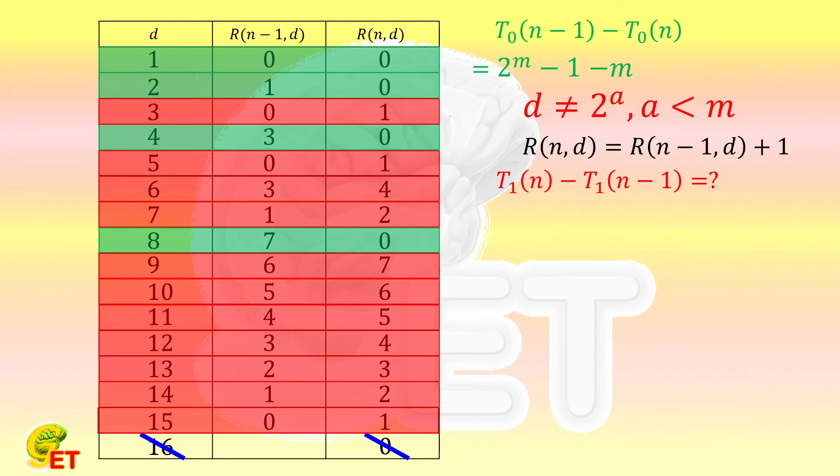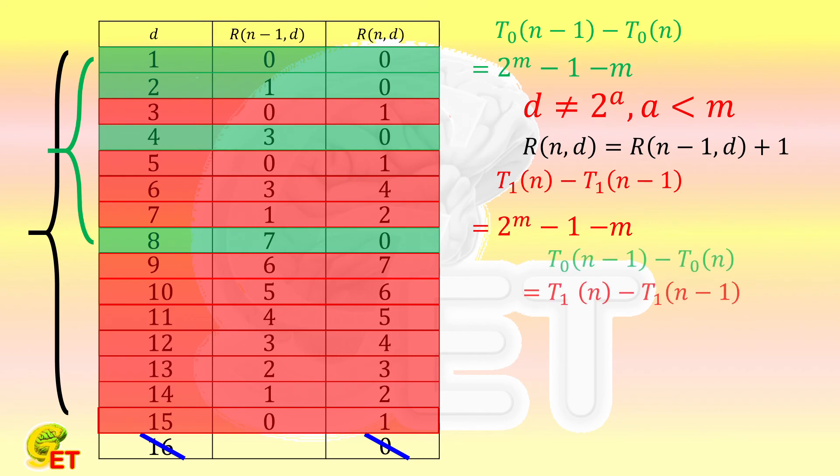Now let's calculate T1(n) minus T1(n-1). Each R(n,d) is bigger than R(n-1,d) by 1. So to calculate this one we just need to count how many terms there are. We know that there are a total of n minus 1 divisors, that is, 2 to the m-th power minus 1 divisors. Among them, there are m terms in the aforementioned case. So in the current case we have a total of 2 to the m-th power minus 1 and then minus m ones. So this result is also 2 to the m-th power minus 1, and then minus m. That is to say, T0(n-1) minus T0(n) and T1(n) minus T1(n-1) are equal. So T(n) is also equal to T(n-1).